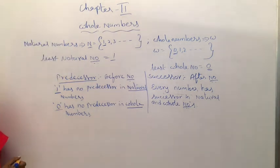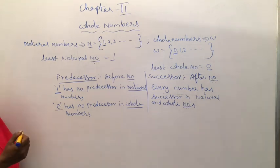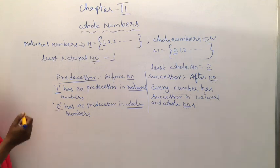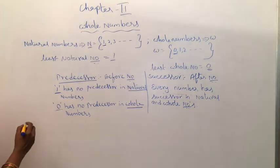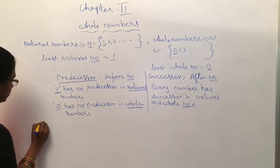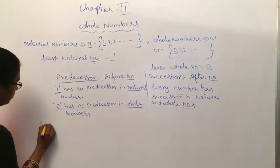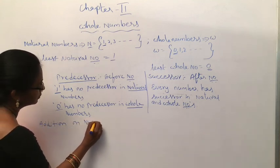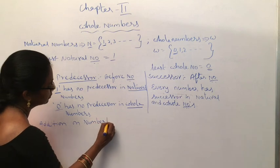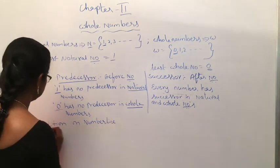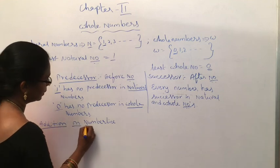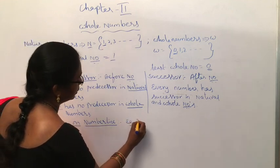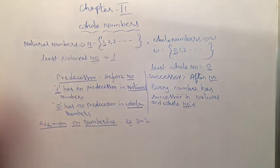Now, how do we represent these numbers on a number line? How do we add, subtract, and multiply on a number line? Let's look at addition on the number line. Example: 3 plus 2.